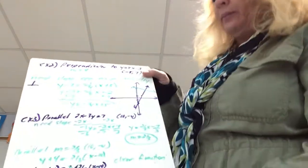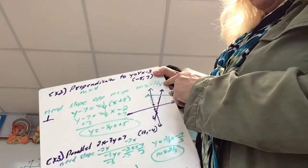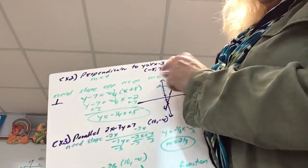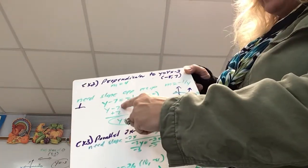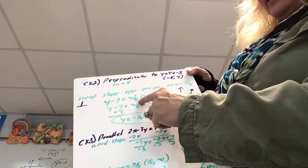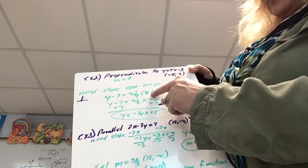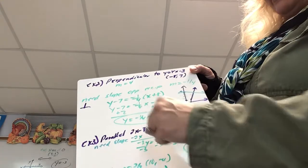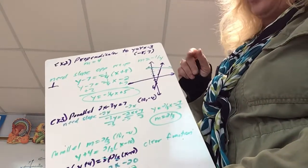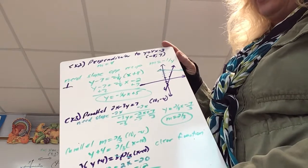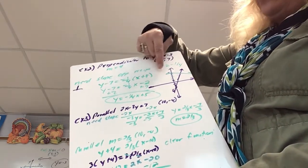Remember, that's the symbol for perpendicular. I've got slope negative one-fourth and a point (negative 8, 7), so I'm going to use point-slope form: y minus 7 equals negative one-fourth times x plus 8. x minus negative 8 is x plus 8. Now I have two options: I could clear the fraction by multiplying both sides by 4, or if I distribute, this is going to reduce nicely.